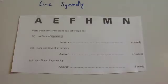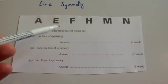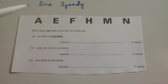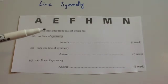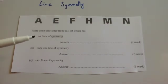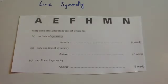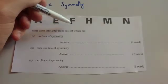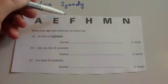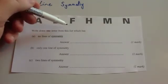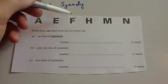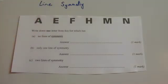Now let's have a look at a couple of exam questions. We've got the letters A, E, F, H, M, and N — all capital. The question says: write down one letter from the list which has no lines of symmetry. Looking at the list, I can clearly see that F has got no lines of symmetry — you can't put a line of symmetry vertically, horizontally, diagonally, or anywhere on the shape that would give a line of symmetry. So F has no lines of symmetry.